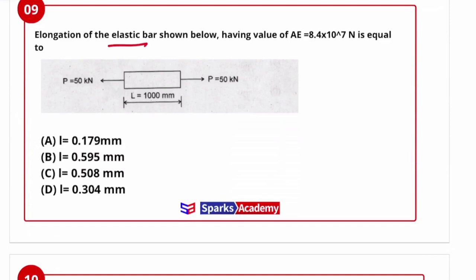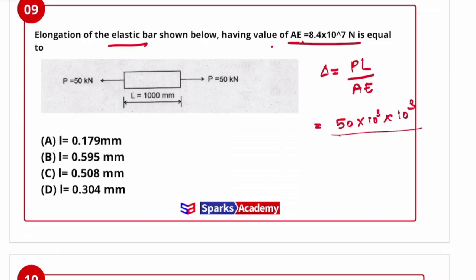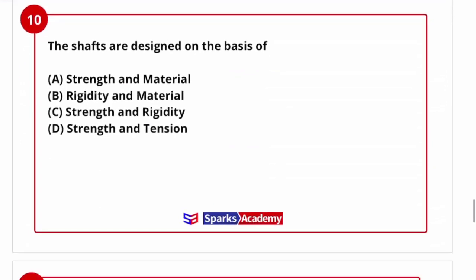Next question: elongation of an elastic bar with given AE value. The universal elongation formula is δ = PL/AE. With P = 50 kN and L = 10 m, numerator is 50 × 10³ × 10. Divided by AE = 8.4 × 10⁷, the answer is 0.595 mm. So option B is correct.